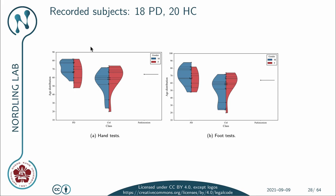Here on the left you can see the age distribution of our subjects. We first have the PD subjects, males in blue and females in red, and then the control subjects, males again in blue and females in red, plus this one subject with Parkinsonism. This is for the hand tests. The only reason it differs from the foot tests is that some of the experiments failed — meaning the data recording was not complete. This is unfortunately unavoidable, in particular when doing a clinical data collection.